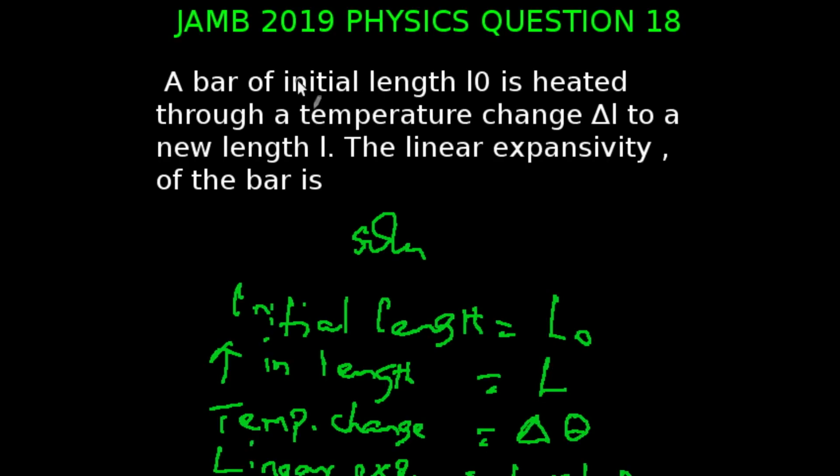Question 18 of the JAMB 2019 physics examination. A bar of initial length L subscript 0 is heated through a temperature change to a new length L. The linear expansivity of the bar is: linear expansivity is usually the increase in length minus initial length, all over initial length multiplied by change in temperature.